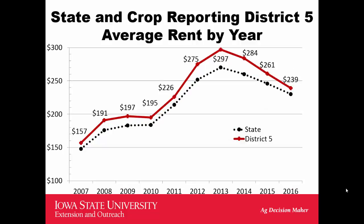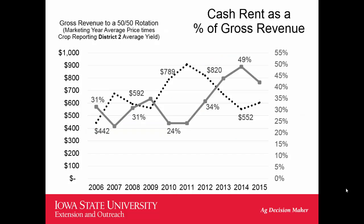District 5 is pretty similar — got close to $300 an acre, dropped down to the $240 range. District 5 would be Des Moines, Polk County area, and surrounding counties. Looking at how much gross revenue landlords typically would have gotten: I estimate landlords get about 32% of the corn revenue and about 42% of the bean revenue, averaging around 37%. We've been up closer to 49%, still above 40%, so traditionally landlords have received less of the total pie.